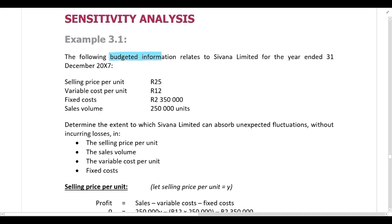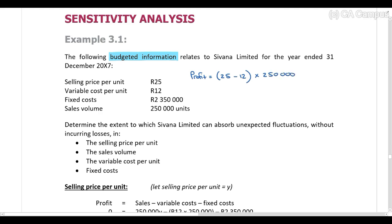The following budgeted information relates to Savannah Limited for the year ended 31 December 20X7. You've been given the selling price per unit, the variable cost per unit, fixed costs, and the expected sales volume. Before we move on, let's calculate the budgeted profit. The budgeted selling price per unit is R25, the variable cost per unit is R12, and they expect to sell 250,000 units. This gives us total contribution; we then deduct fixed costs to calculate the budgeted profit.